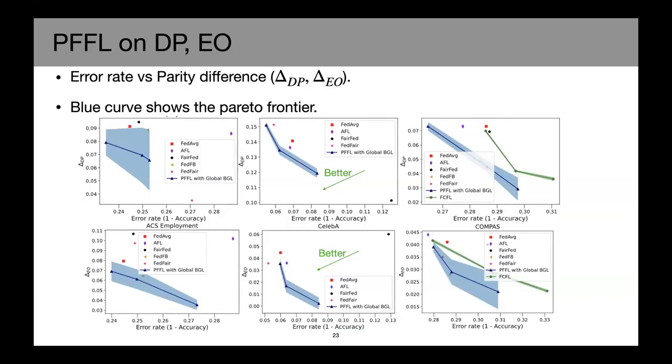We also test our method on some more popular fairness notions, such as demographic parity and equal opportunity here, DP and EO for short. In these figures, the Y axis is the delta DP or delta EO, which is the parity difference. And the X axis is the error rate. So for both of them smaller is better. So we want to see the points to be at bottom left corner.